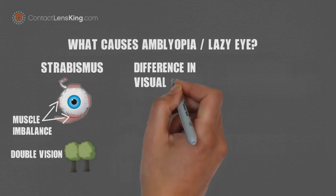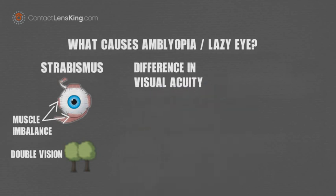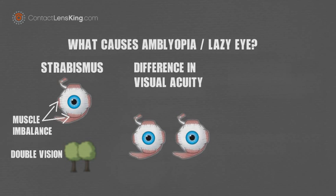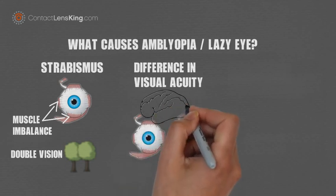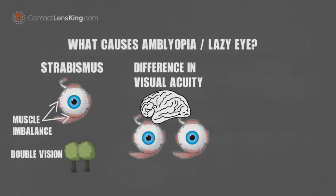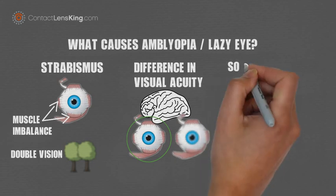A difference in visual acuity between the eyes is another cause. A misalignment can also be caused by poor vision and not poor muscles. This misalignment forces the brain to use the dominant eye, ultimately weakening it both visually and muscularly.